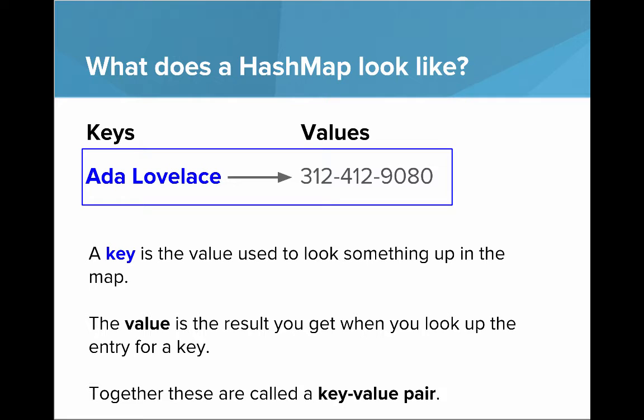So a key is the value used to look something up in the map. Ada Lovelace is the key. The value is the result you get when you look up the entry for a key. Here, we have Ada Lovelace's phone number.